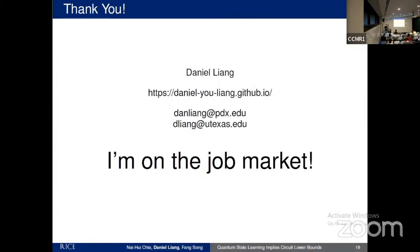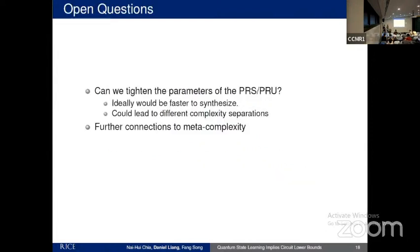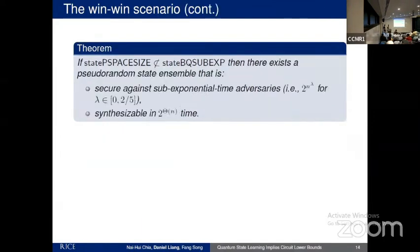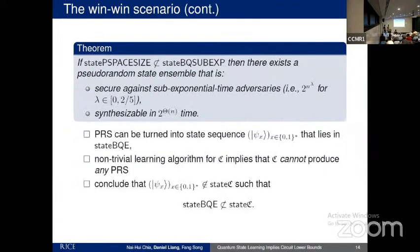Question from Alex: In the win-win argument, one side only needs a classical assumption, and you show it implies a quantum assumption. Can you hope to have just a classical assumption on the other side as well? Answer: This one cannot work with just the classical assumption, but the other side does work with only the classical assumption — however, then it's no longer a win-win.